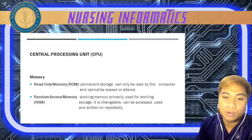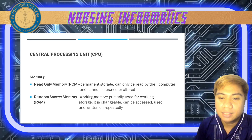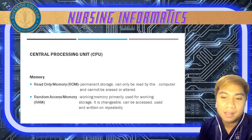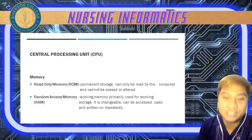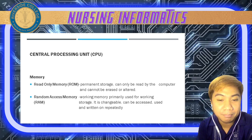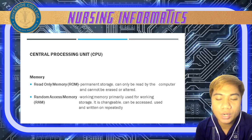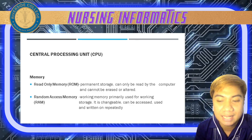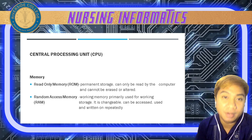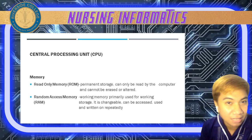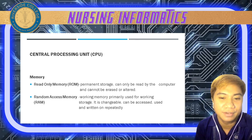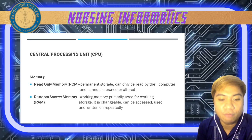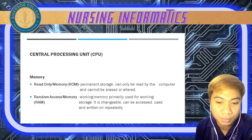When we talk about ROM or Read Only Memory, it is permanent storage that can only be read by the computer and cannot be erased or altered. We also have RAM or Random Access Memory — working memory primarily used for working storage. It is changeable and can be accessed, used, and written on repeatedly. ROM includes software programs that are not erased when the computer is turned off.